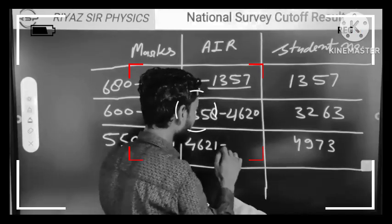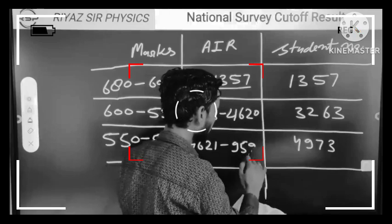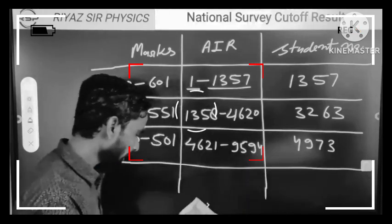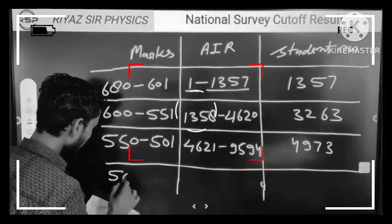What I mean to say is that your rank should be between 550 to 501 marks from 4621 to 9594.